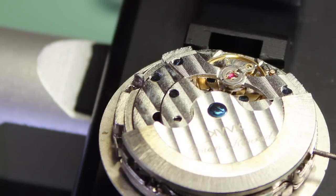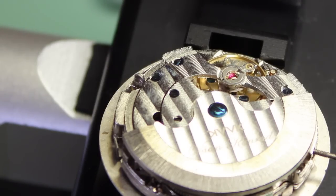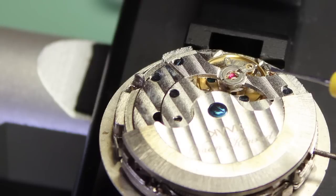Now the second problem that can cause a watch to gain huge amounts every single day will be that the hairspring of the watch will be usually bound together by a contaminant. And so I am going to illustrate that with this scrap movement.